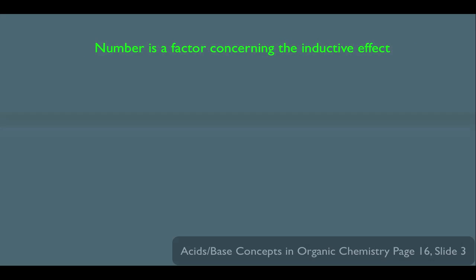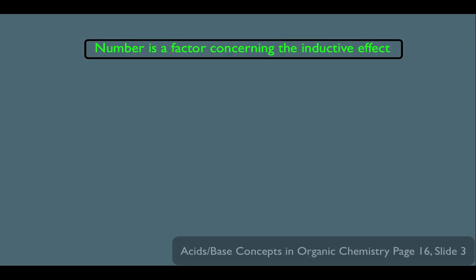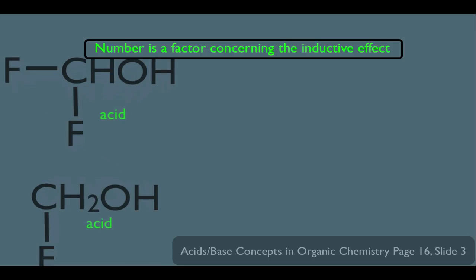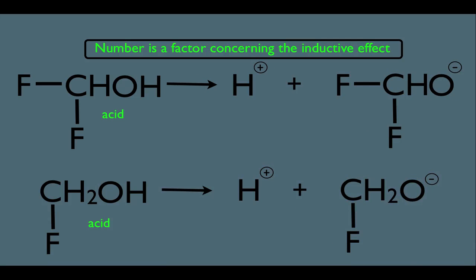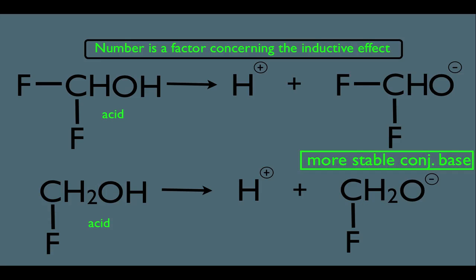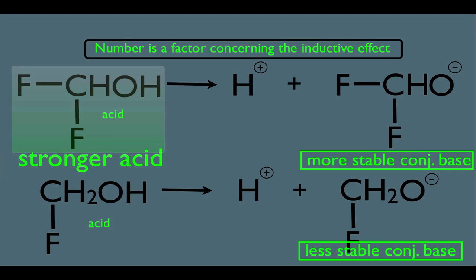The next nuance is that number is also a factor concerning the inductive effect. Comparing two acids and looking at their conjugate bases, the top conjugate base has two F's connected to that carbon, whereas the bottom conjugate base only has one F. Having more F's means a greater inductive withdrawing effect. Therefore, the top conjugate base is more stable, and the top acid is the stronger acid.